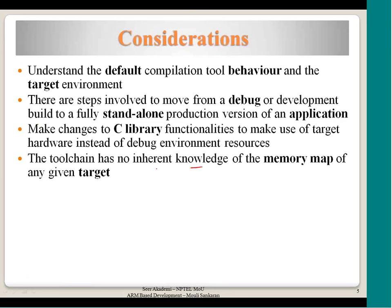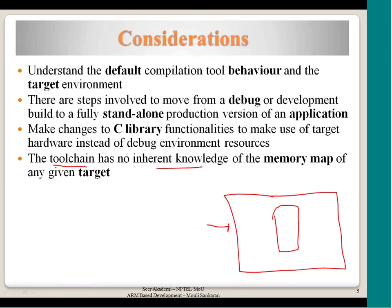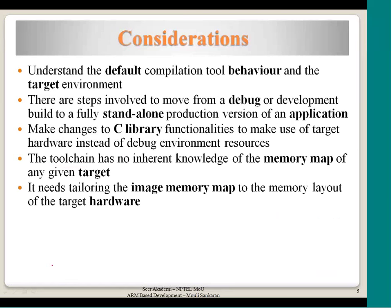The tool chain has no inherent knowledge of the memory map of any given hardware. The tool chain — compiler, linker, assembler — is developed for a generic memory map and can generate output for any memory map within the 32-bit boundary. We have to provide that knowledge through configuration parameters, tailoring the image memory map to match the memory layout of the target hardware.